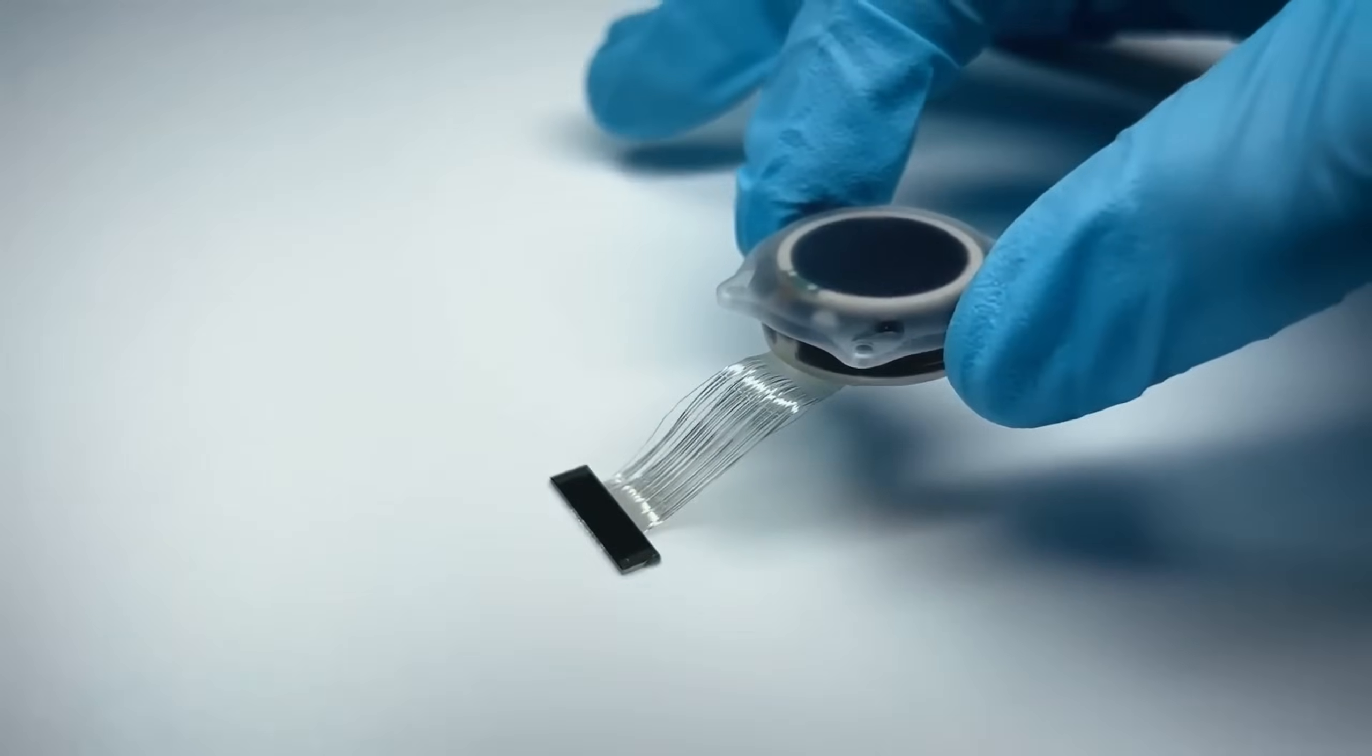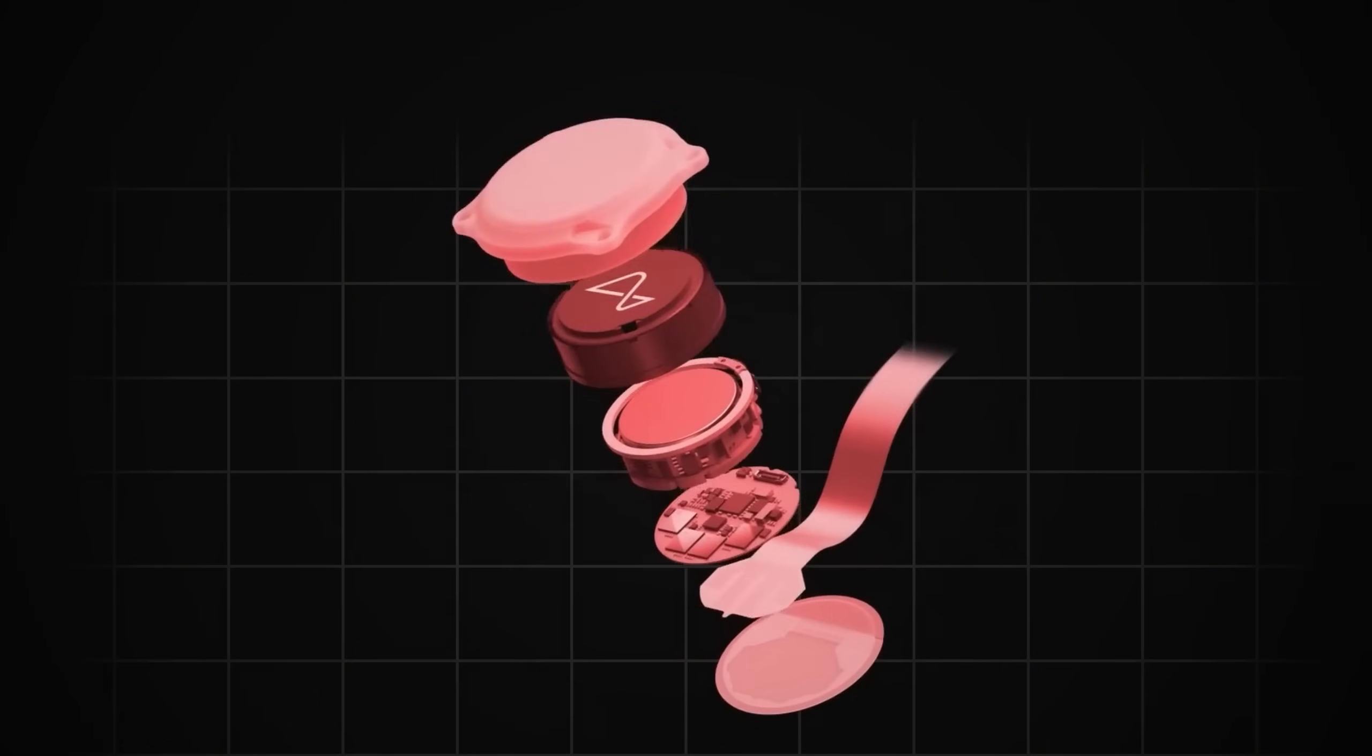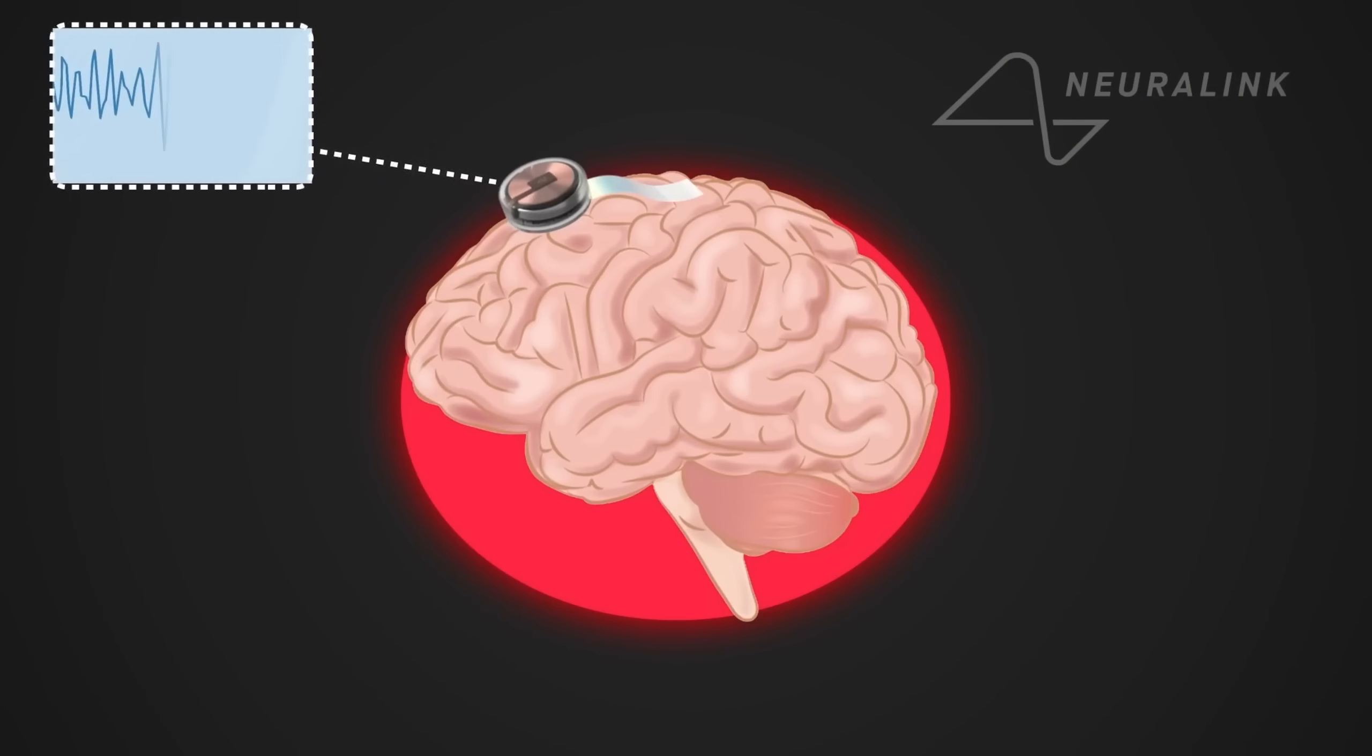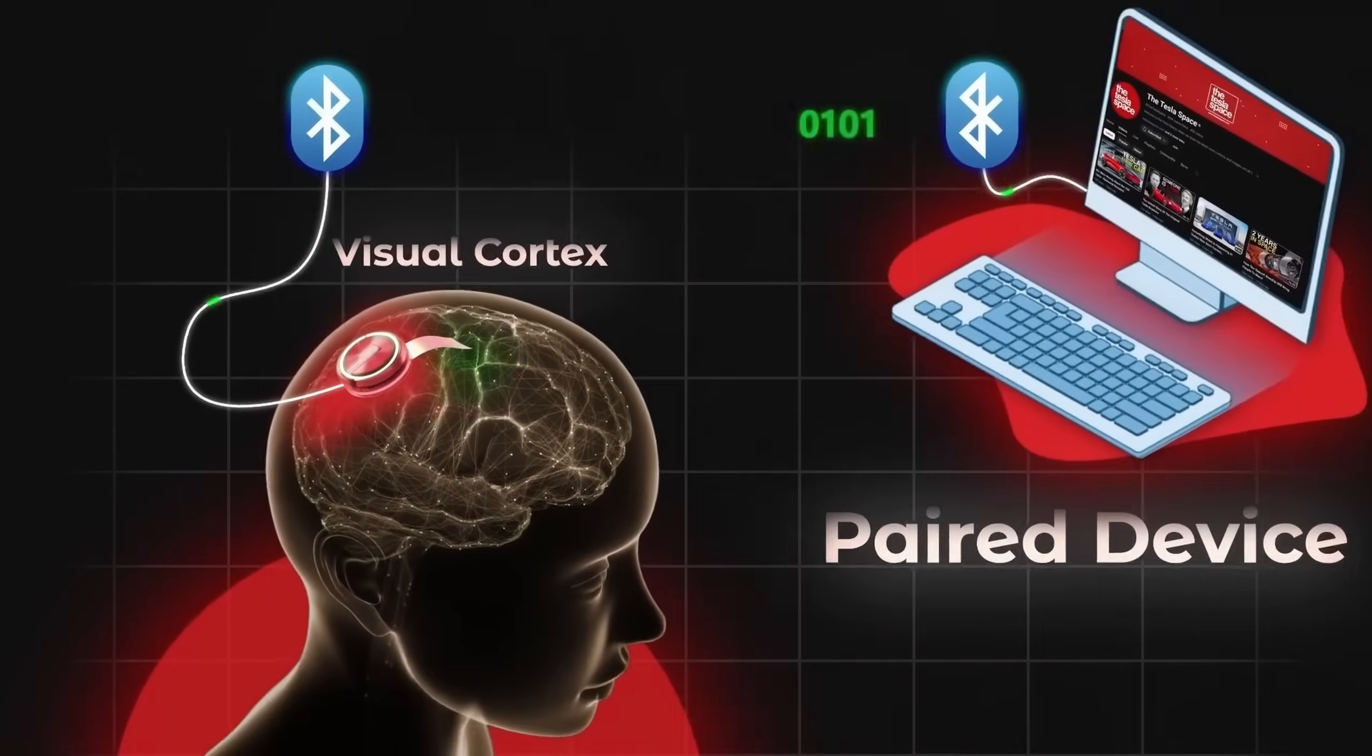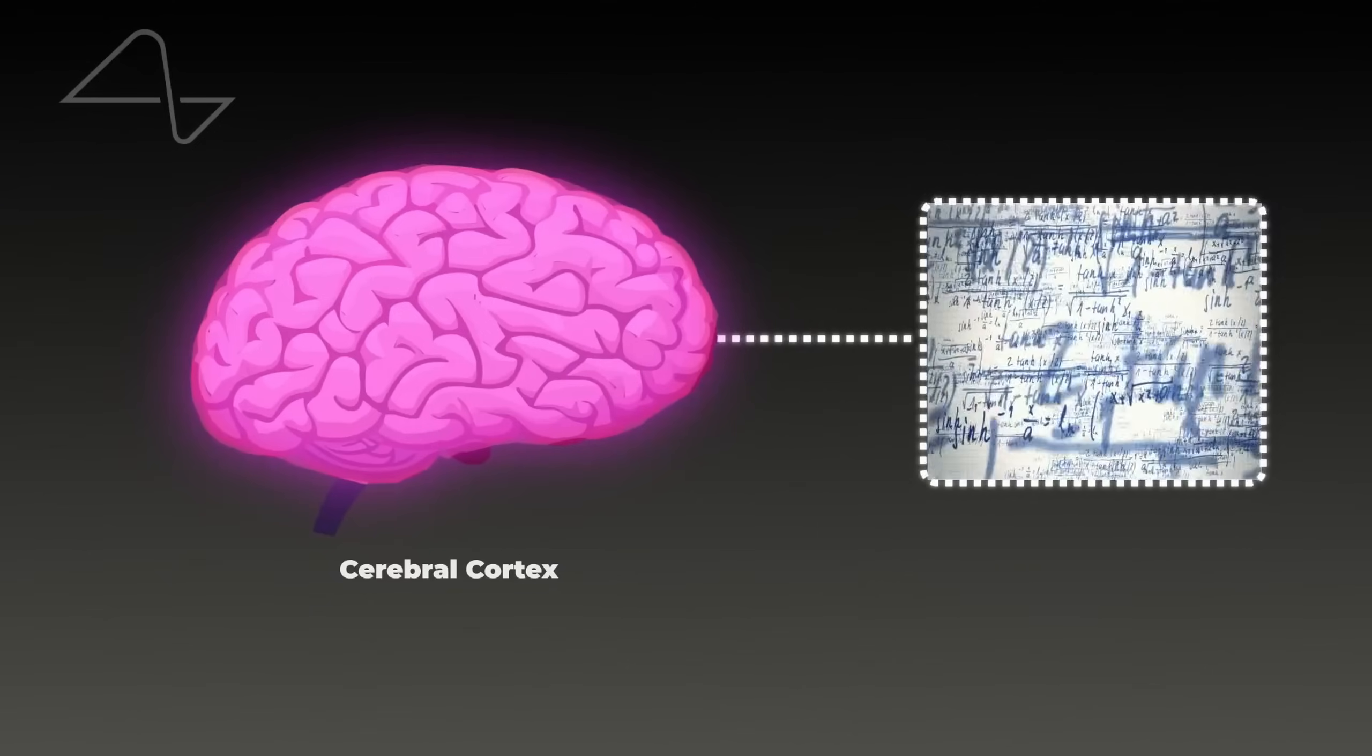But for the second patient, the chip was designed even better to work more efficiently and last longer. Elon said the new chip would have 108 threads, but each thread would have only eight electrodes. He believes this change could double how much information they can handle if they place the threads just right. They also put the threads deeper into the brain this time, about eight millimeters deep, compared to three to five millimeters for Nolan.